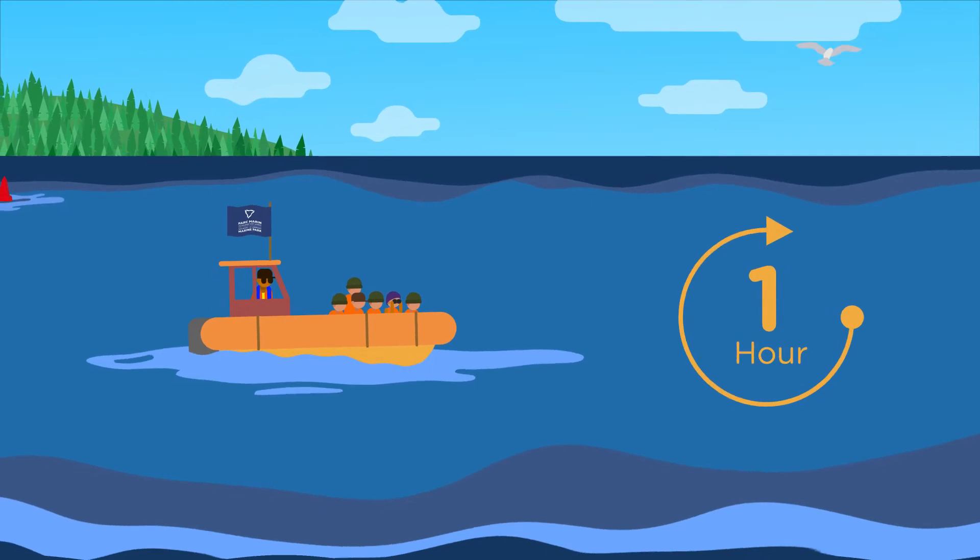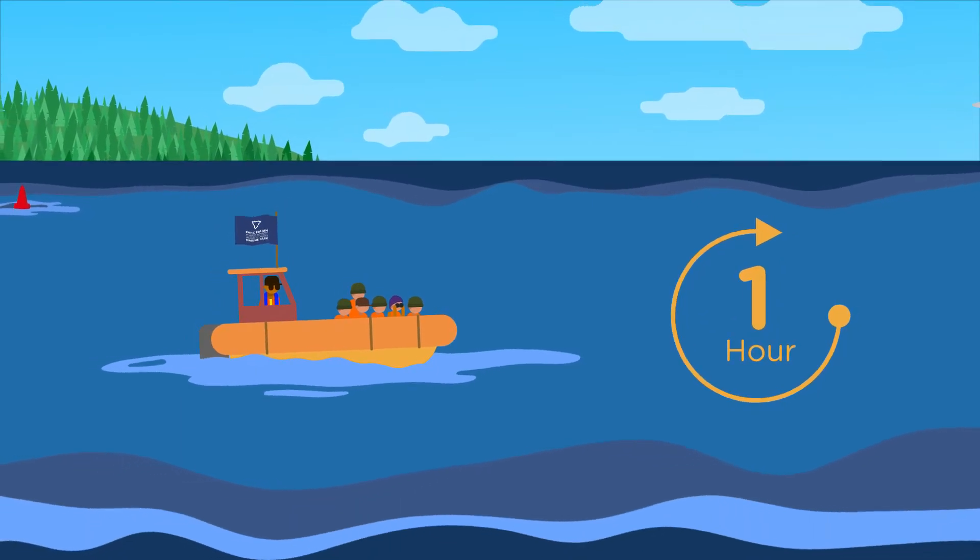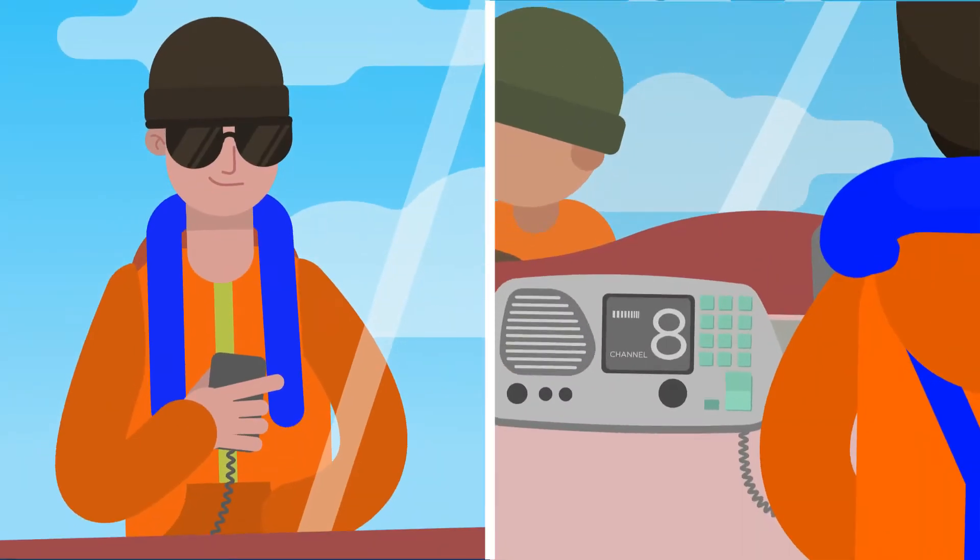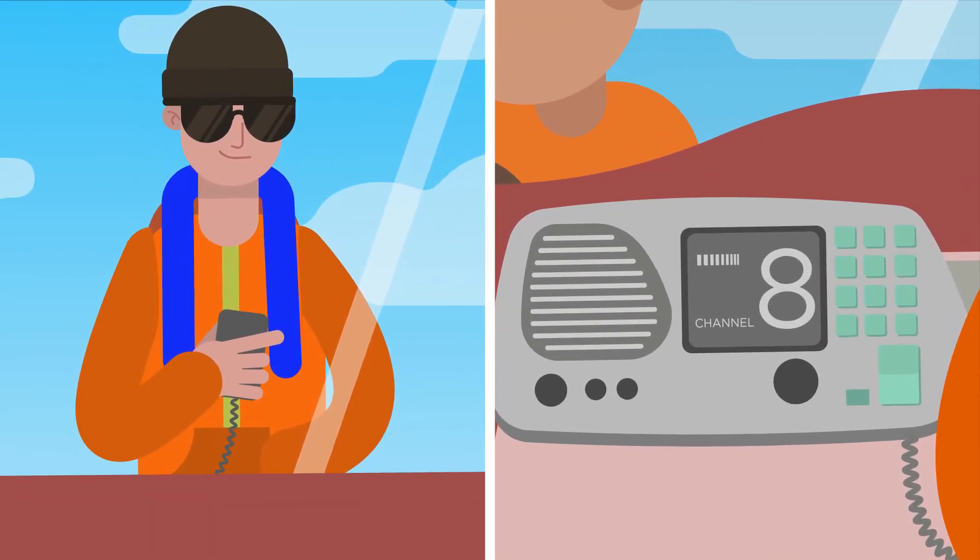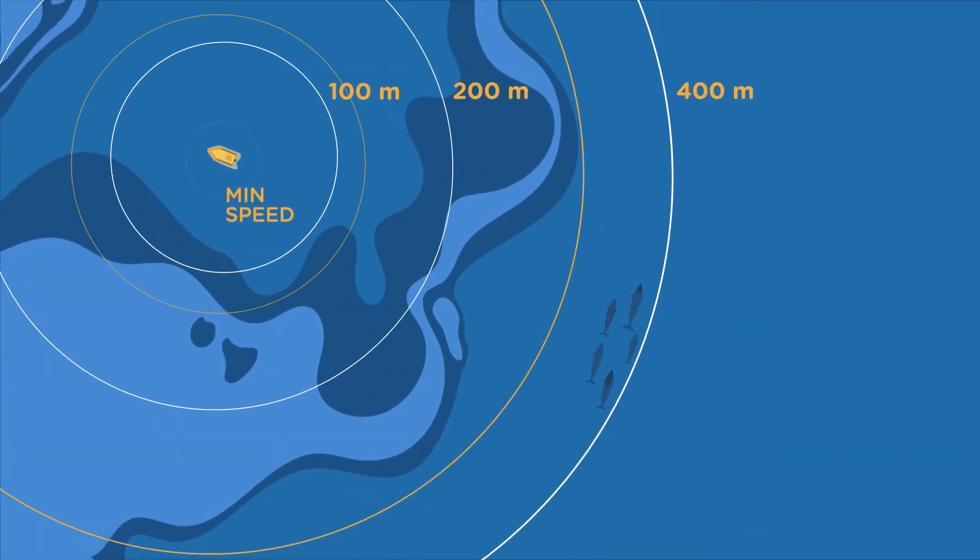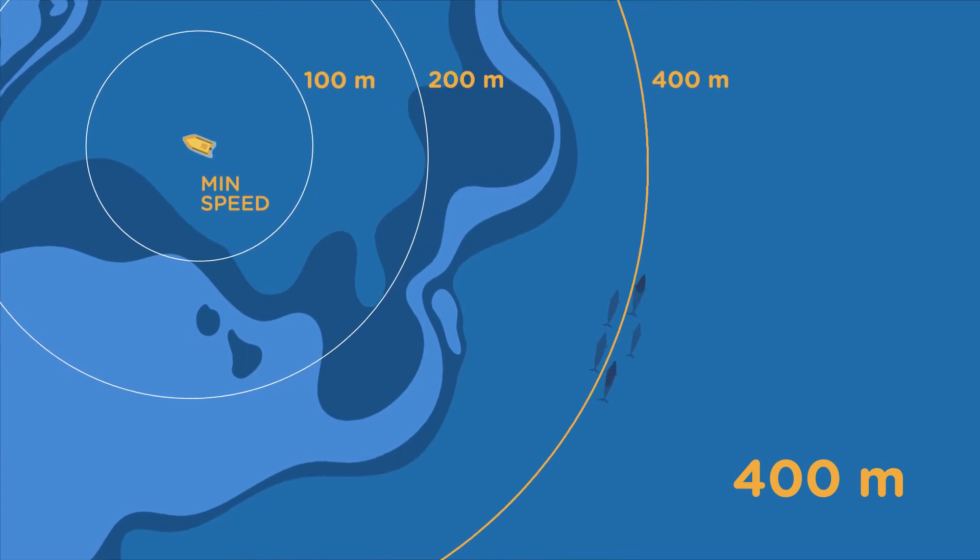Now, you want to leave the observation site. What is the best way to proceed? First, announce your intentions on Channel 8. Proceed at your minimum speed until you're at a distance of 400 meters away from the last whale.